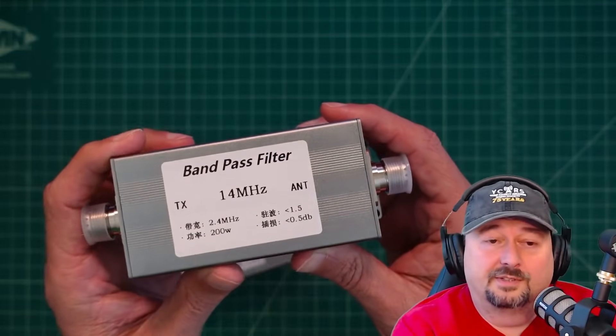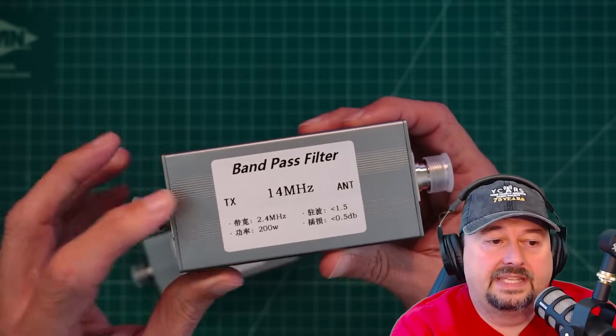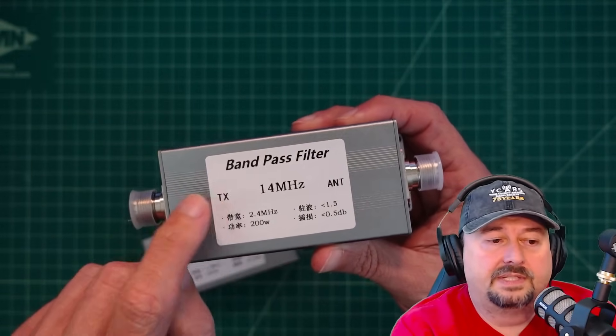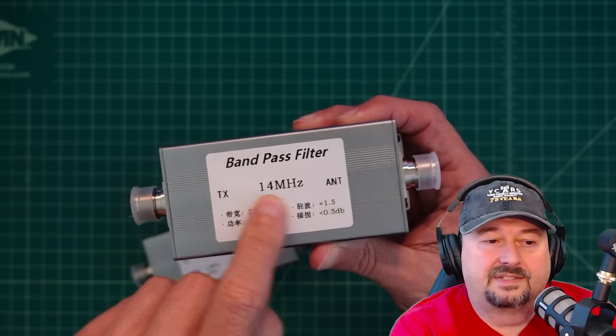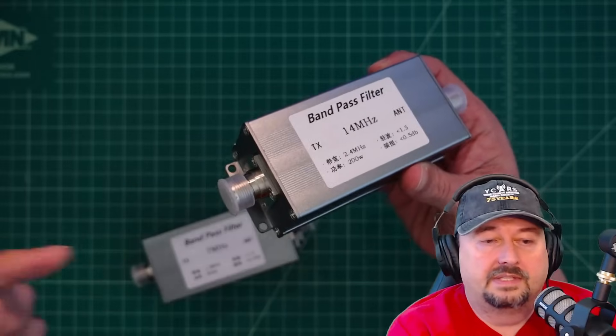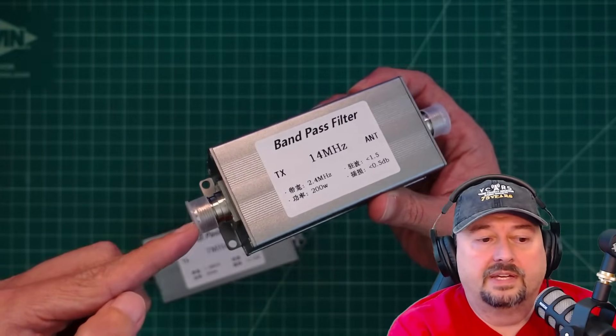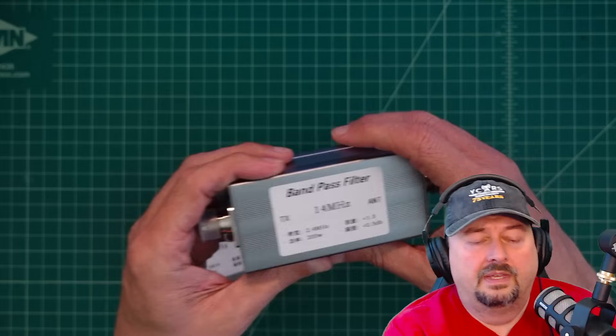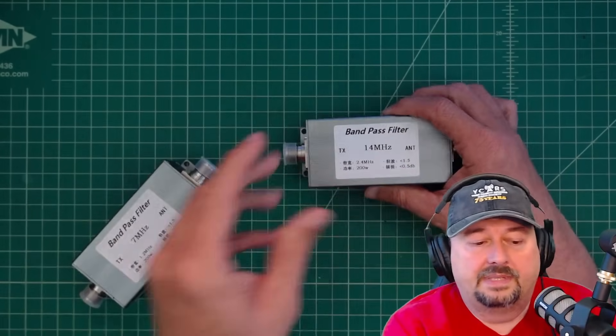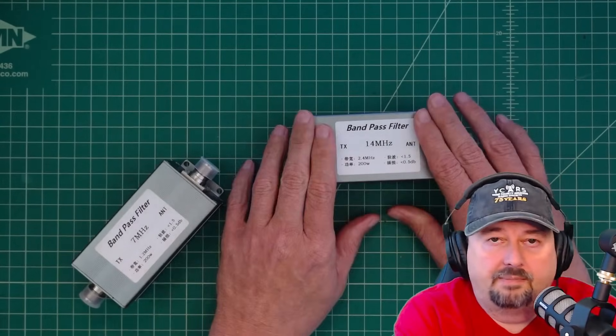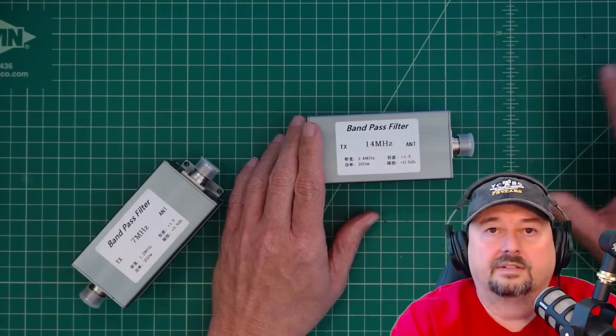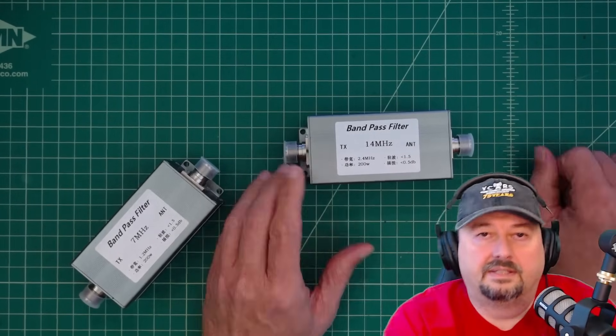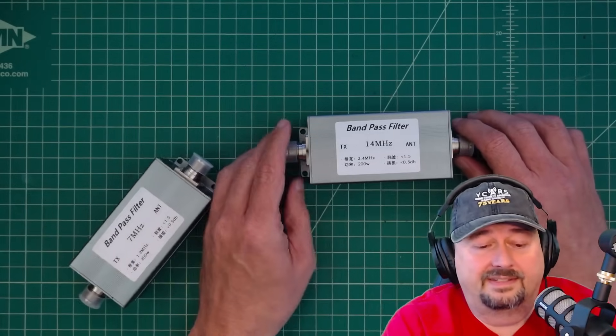So it's labeled bandpass filter, so you know what it is. And it has a transmission side and an antenna side, and I should say transceiver side. So that means that you would put the output of your radio here on your bandpass filter, and then you would connect this to your antenna. Now, when you connect these up, it's typically radio, bandpass filter, amplifier, tuner. That's the sequence of events that you want to set up there.